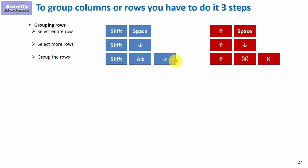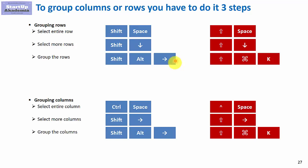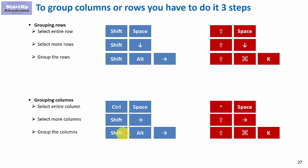For the columns, it's almost the same. We use a different shortcut for selecting — Ctrl+Space. But the rest is the same: selecting more columns is Shift and the arrow, in this case arrow to the right, and Shift+Alt and the arrow to the right to group the columns.